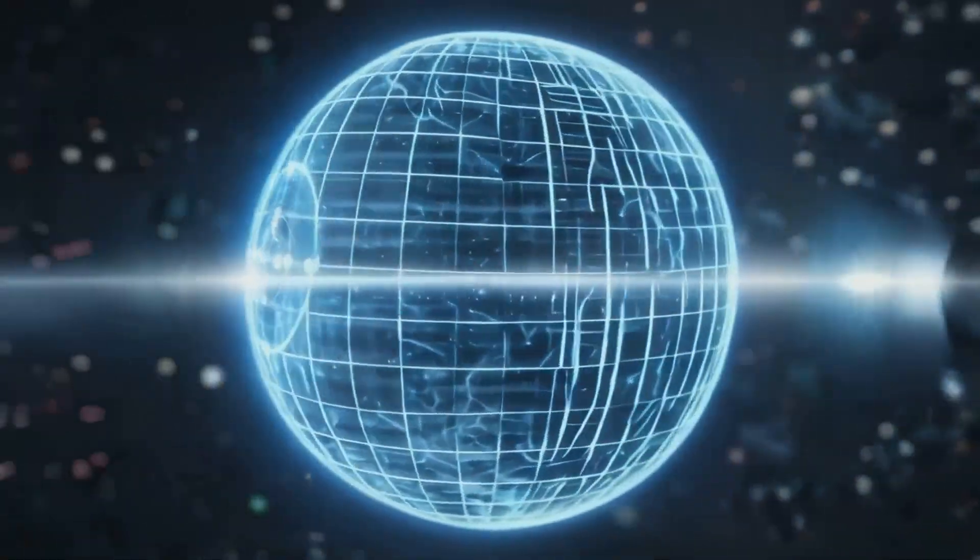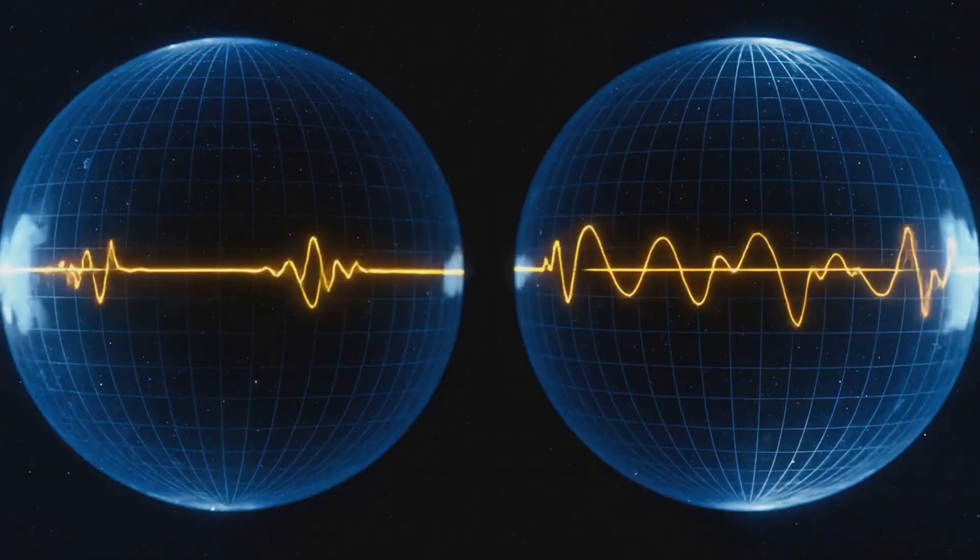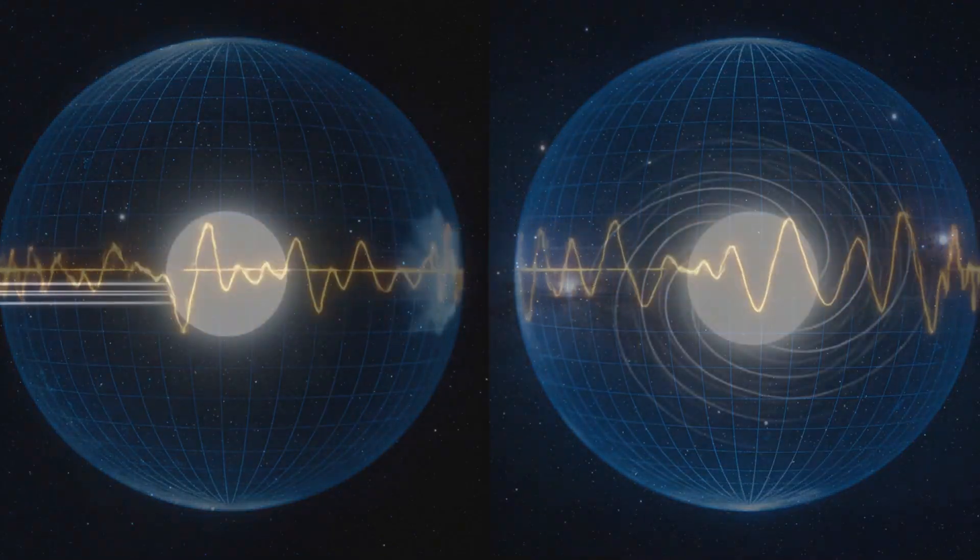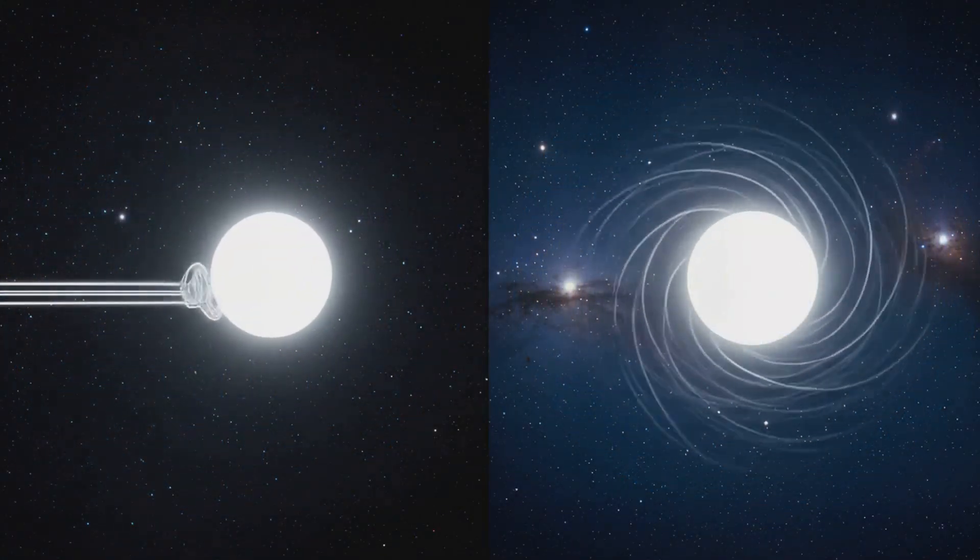The faster something spins, the more its local clock slows down. This matches Einstein's time dilation, but in QIH it is angular frequency, not linear speed, that causes time to bend.